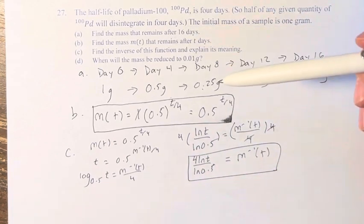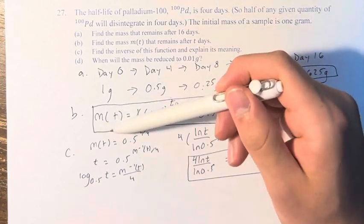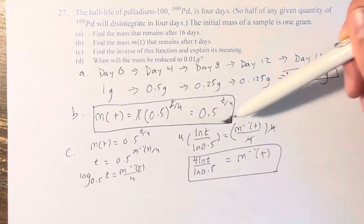This is your function, and it represents the inverse relationship. So m(t) is mass in terms of time. Therefore, this is time in terms of mass.